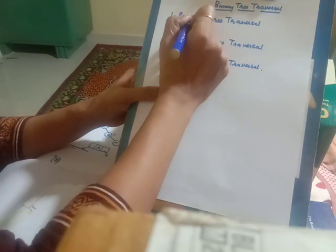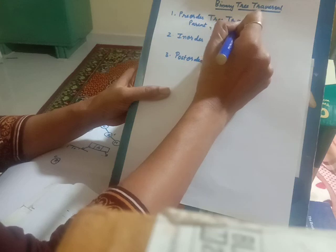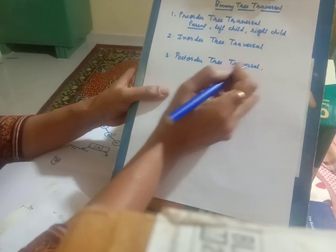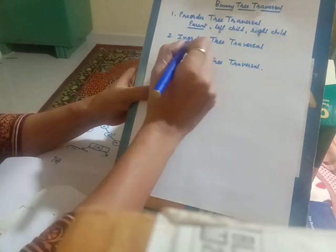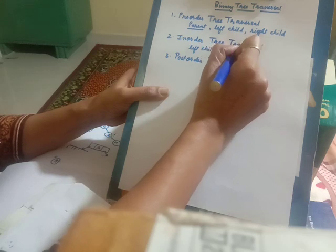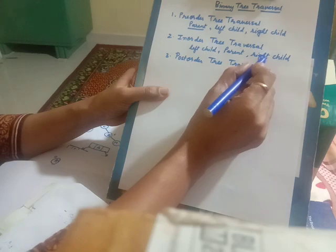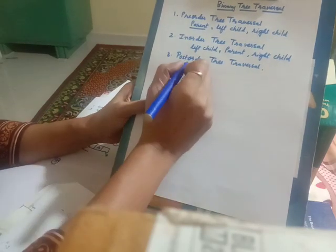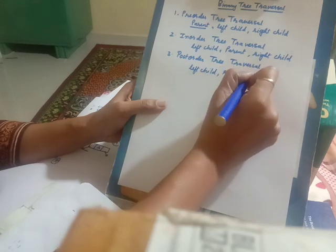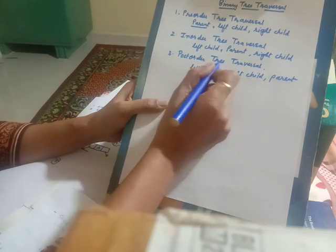In pre-order tree traversal, first the parent node is processed, followed by the left child, followed by the right child. Since the parent is processed before left and right child, it is called pre-order. In in-order, first the left child is traversed, followed by the parent node, followed by the right child. In post-order, first we process the left child, followed by the right child, and finally the parent.